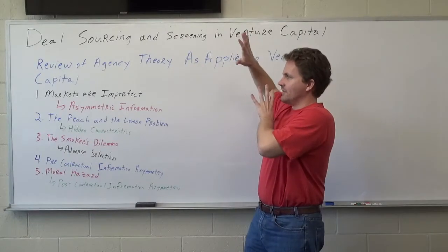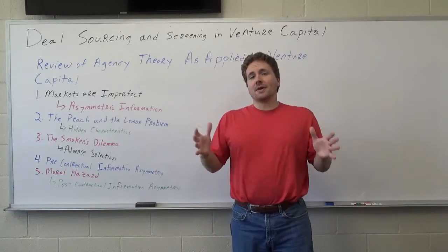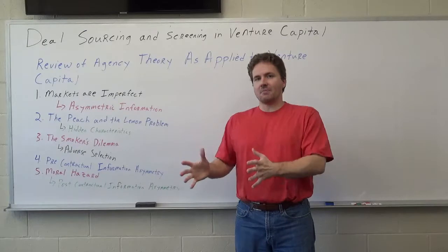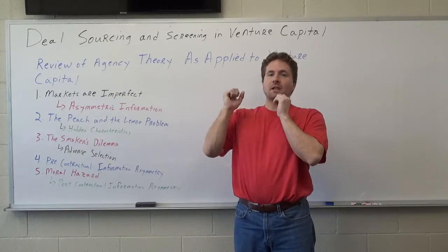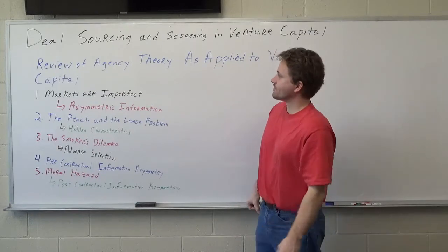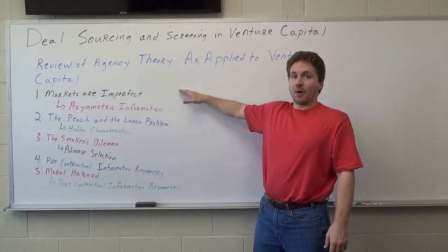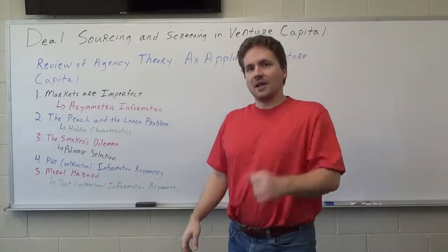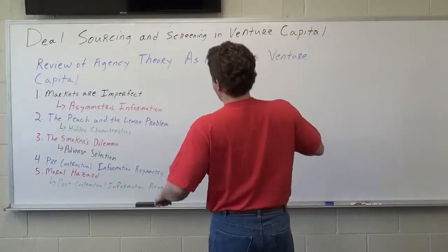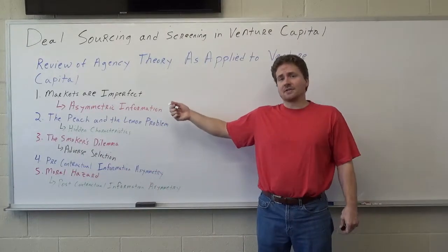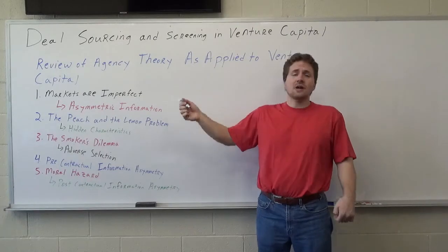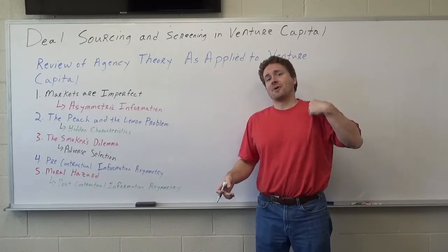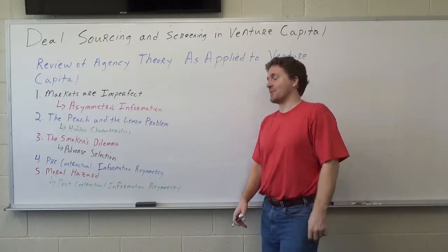When we apply agency theory to venture capital, you want to make sure that the interests of the entrepreneur match the interests of the fund manager, the venture capitalist, and the limited partners. First of all, you've got to accept markets are imperfect. We're talking about entrepreneurship, not economics. I draw a lot from Austrian economics here — I have a whole playlist on my channel about Austrian economics, and I'm wearing the same color t-shirt in that video series, so it should be pretty easy to find.